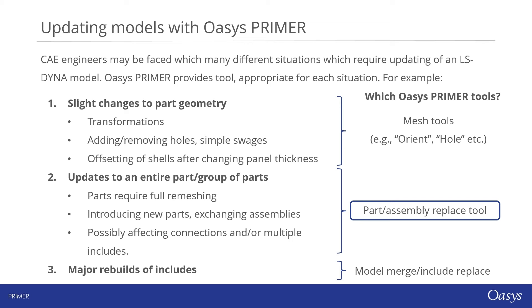The first category concerns slight changes to part geometry. These may include transformations such as translations, rotations or reflections. Or we may want to make small changes to the mesh in a part but decide that remeshing the entire part is unnecessary — for example, adding or removing holes, adding swages, or offsetting shells after changing panel thickness. For changes like these, we'd recommend exploring OASIS Primer's mesh tools.